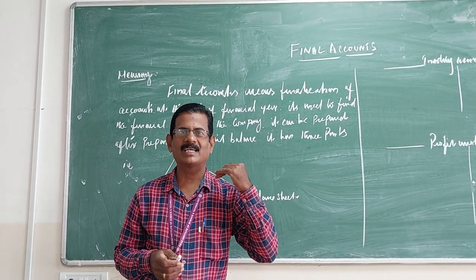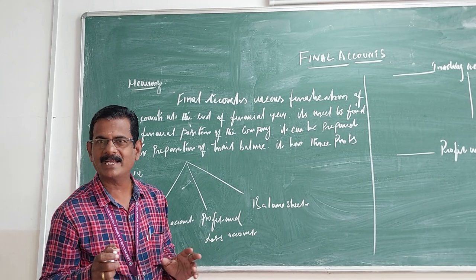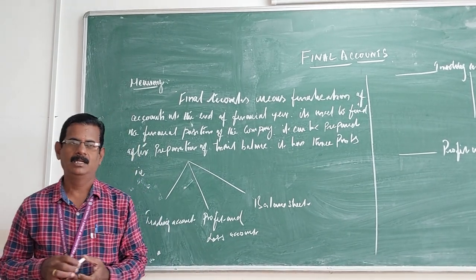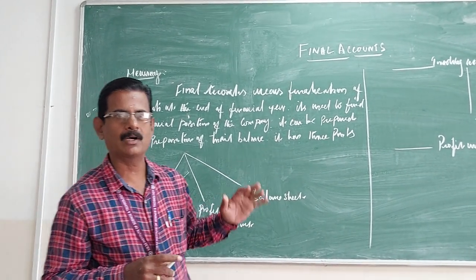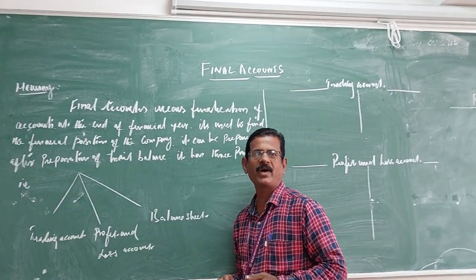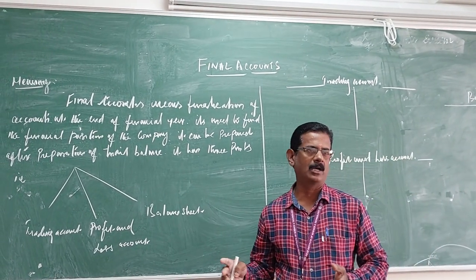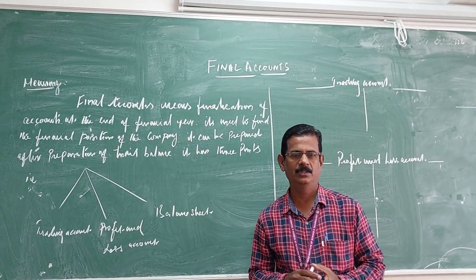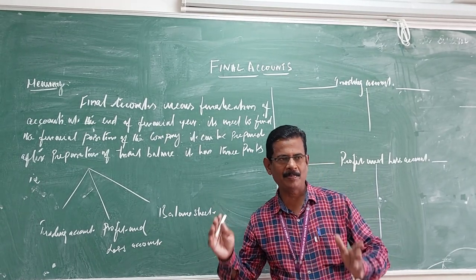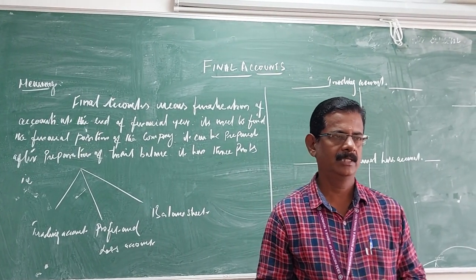Final account is prepared at the end of the financial year. It is used to find whether the business comes involved with profit or loss during the year. It can be prepared after preparation of trial balance.